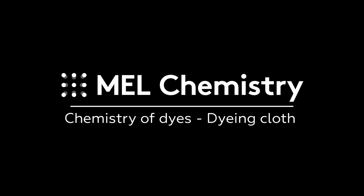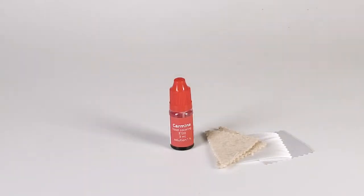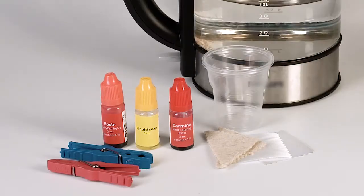For the experiment Dyeing Cloth, we will need two pieces of polyester, two pieces of wool, carmine, liquid soap, eosin, two clothespins, two plastic cups and boiling water.